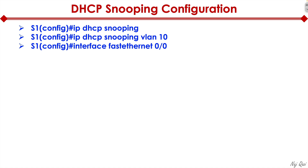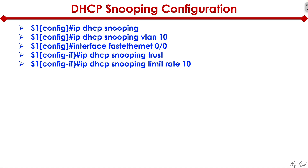We then go into interface configuration mode — for example, interface FastEthernet 0/0. Once there, we can type 'ip dhcp snooping trust'. If we trust that port, say a DHCP server is plugged into it, this command allows the DHCP server to behave normally — we completely trust this port. For an untrusted access port where we don't know who will plug in, we use 'ip dhcp snooping limit rate 10', which limits DHCP requests to just 10 per second.